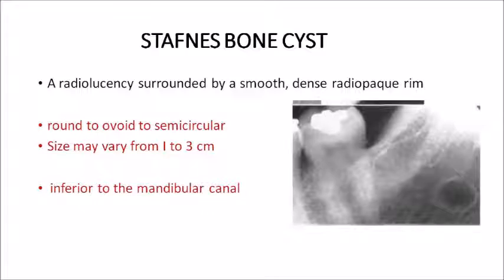Stafne bone cyst: it presents as a solitary radiolucency surrounded by a smooth dense radiopaque rim. Location is very important — it is seen inferior to the mandibular canal (below the inferior alveolar canal). The shape is round, ovoid, or semi-circular. Size usually varies between 1 to 3 centimeters. If the lesion is above the inferior alveolar canal, it is more likely a traumatic bone cyst; if below, it is a Stafne bone cyst.